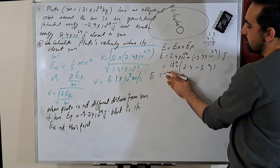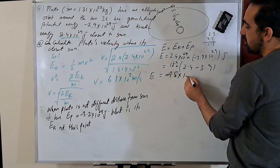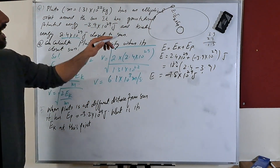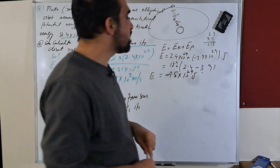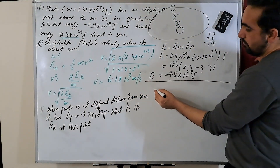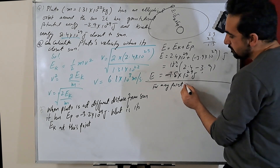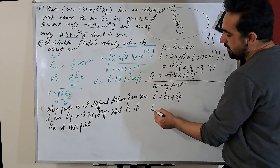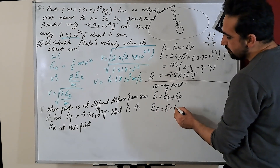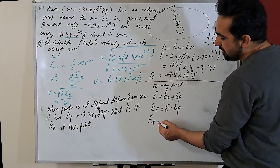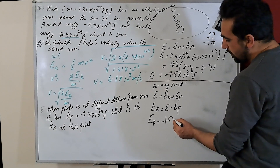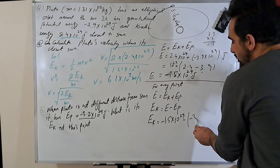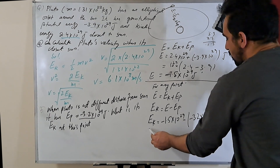The total energy of Pluto equals minus 1.5 × 10²⁹ joules. This total energy remains constant throughout the orbit, so we can use it for any point. Using E equals E-k plus E-p, we get E-k equals E minus E-p, which is minus 1.5 × 10²⁹ minus the potential energy of minus 3.2 × 10²⁹ joules.